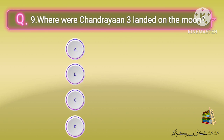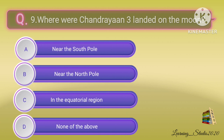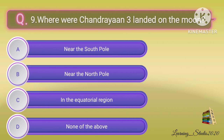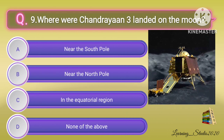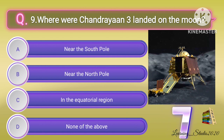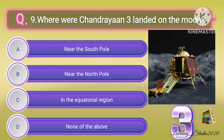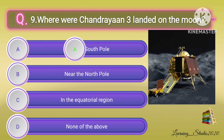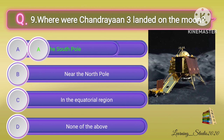Where did Chandrayaan 3 land on the moon? Correct answer: option A, near the south pole.